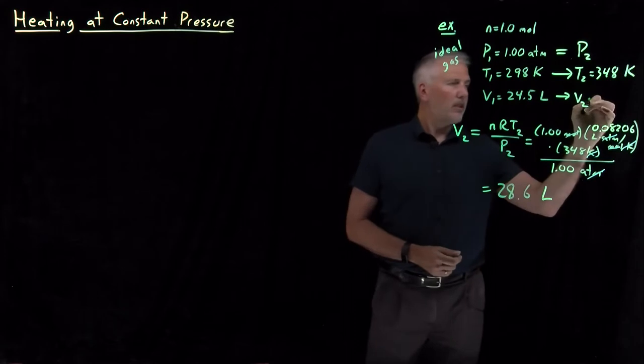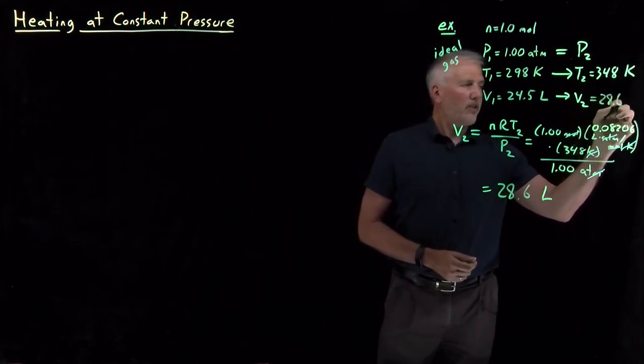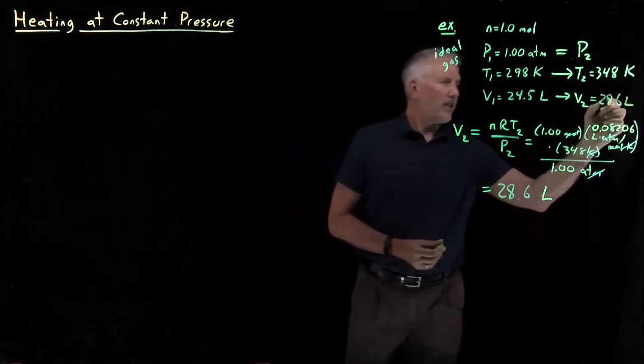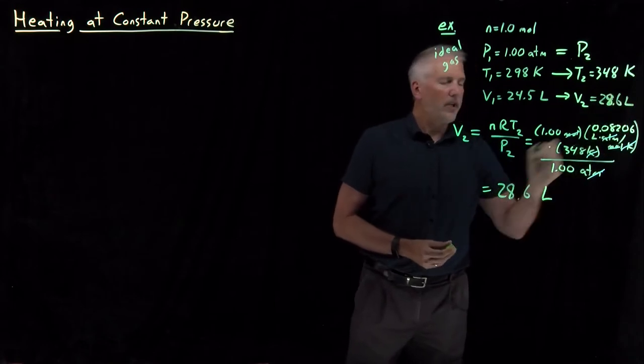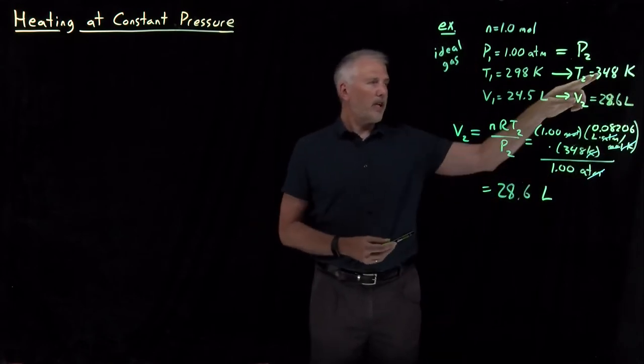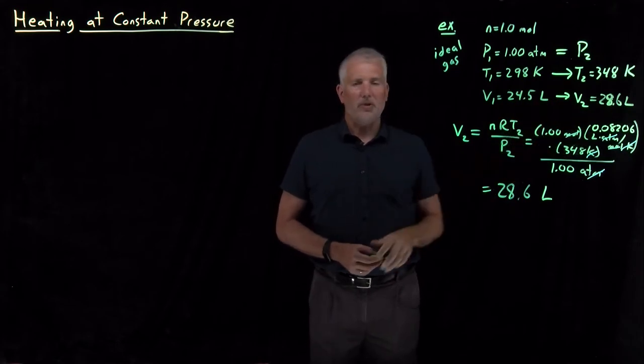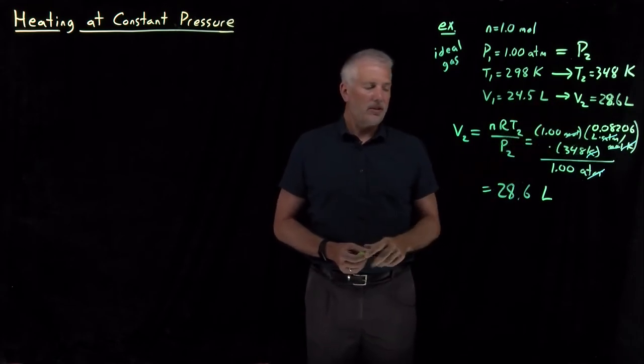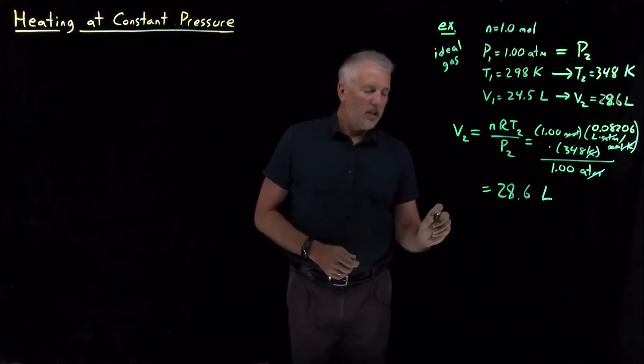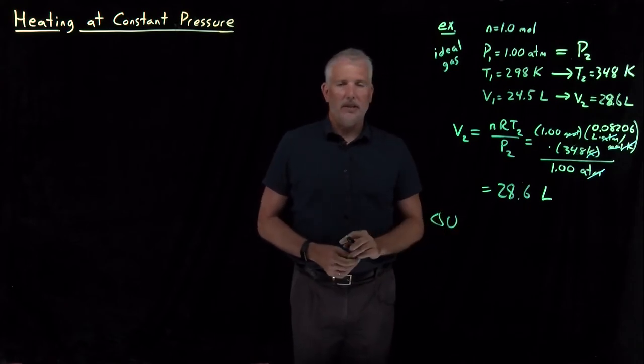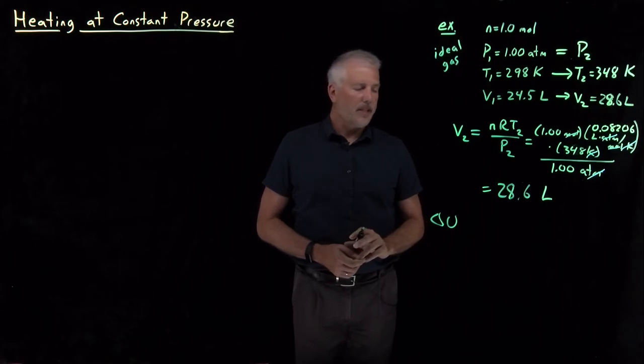As expected, the volume of our ideal gas increases as I heat it from room temperature of 298 Kelvin up to 50 Kelvin hotter. The volume increases by the same ratio, 24.5 up to 28.6 liters. Now we're ready to start calculating properties like the change in the internal energy and the heat and the work.